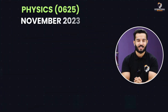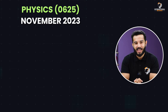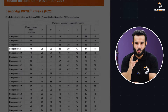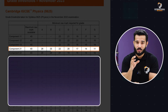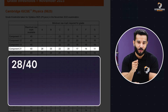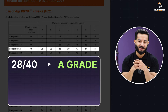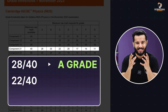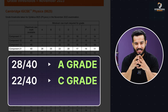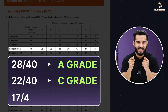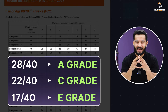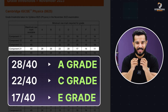Let's take an example from the Physics November 2023 exam. Here's the grade threshold table. For component 2-1, if a student scores 28 or more out of 40, they will get an A grade. If they score 22 out of 40, they will receive a C grade. Similarly, a score of 17 earns a grade E. Grade thresholds show exactly how many marks you need to reach each grade.